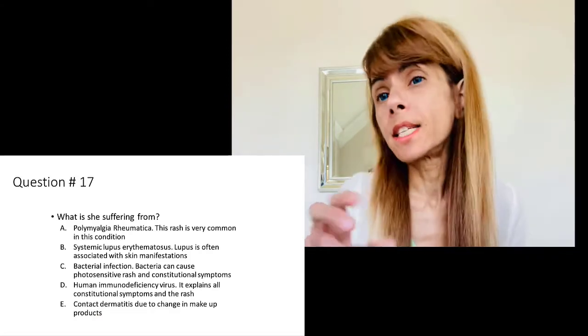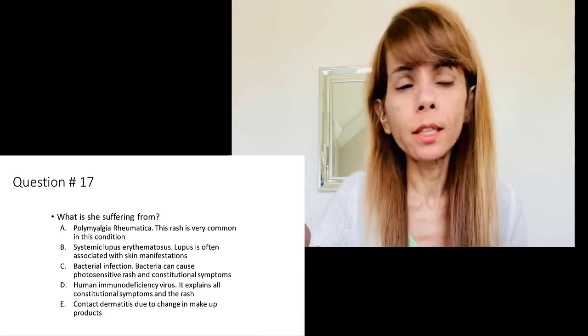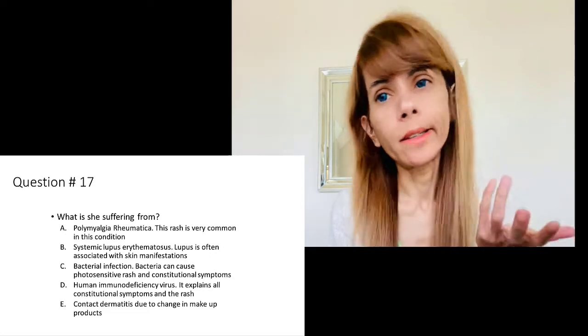Lupus or systemic lupus erythematosus is a multi-symptom, multi-system disorder with inflammation throughout the body. At least 4 out of 11 criteria must be present as referenced in the DSA. While prototypical examples are presented in exams, real-world patients are not always prototypical, so it's always a good idea to look for this disorder since it is more prevalent than we think. The other answer choices — bacterial infection, HIV, and contact dermatitis — are not consistent with this presentation.